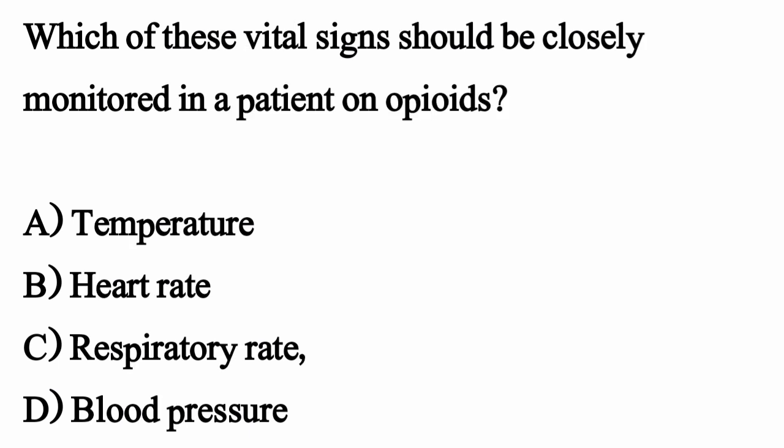Which of these vital signs should be closely monitored in a patient on opioids? The correct option is option C, Respiratory Rate.